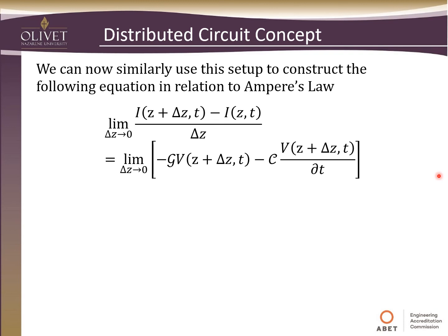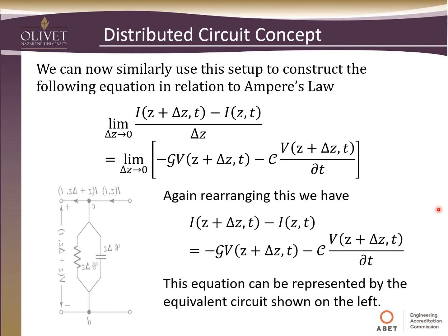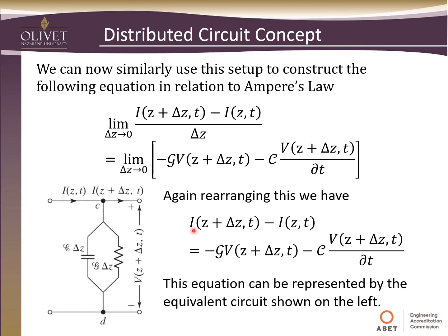That was based on Faraday's law. We can do the same thing for Ampere's law — again taking the limit as delta-z goes to zero for this differential length. When we rearrange, we see that the current across our differential length equals the conductance times the voltage across that differential length minus the capacitance times the time derivative of that voltage. This can be represented by the equivalent circuit for Ampere's law.